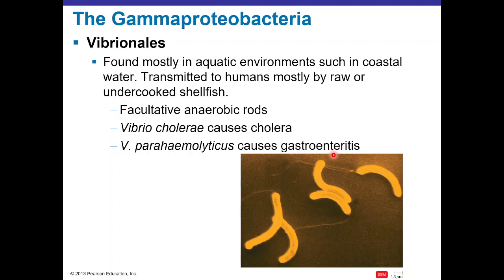Other Gamma Proteobacteria include Vibrionales, which lives mostly in aquatic environments. Members include Vibrio cholerae and Vibrio parahaemolyticus, mainly transmitted by consuming raw or undercooked contaminated fish. These are facultative anaerobes with a rod or comma shape. Vibrio cholerae causes cholera — a profuse diarrhea leading to dehydration and death. Vibrio parahaemolyticus also causes diarrhea but is less severe.